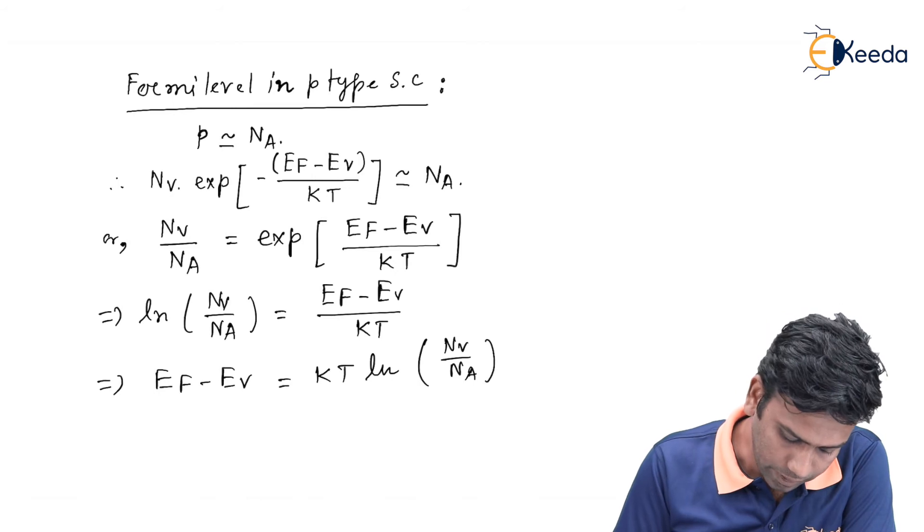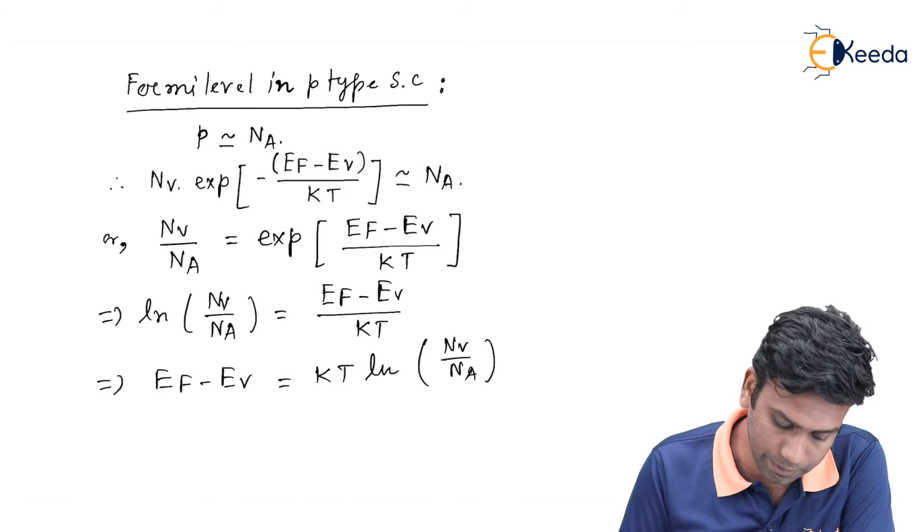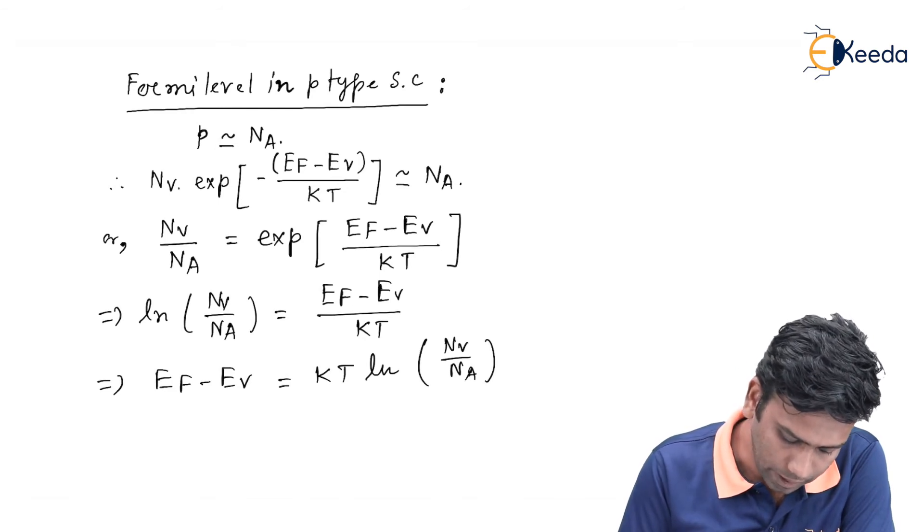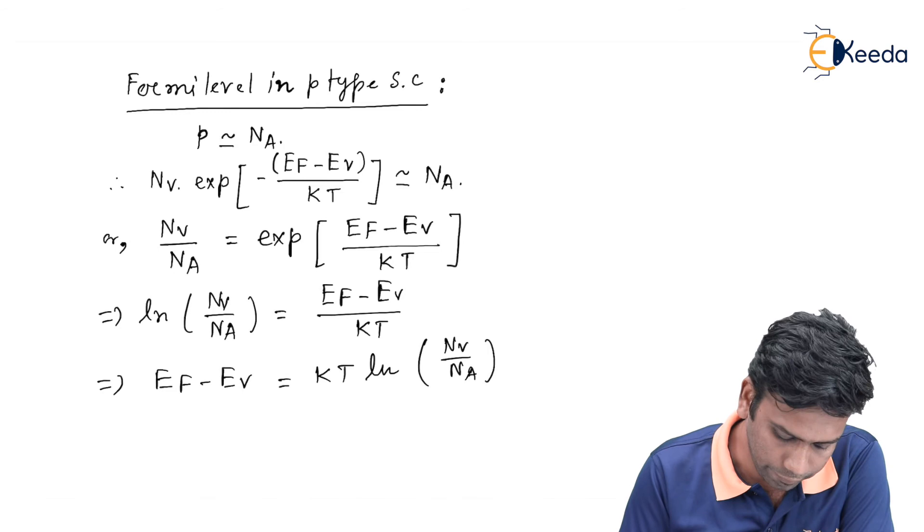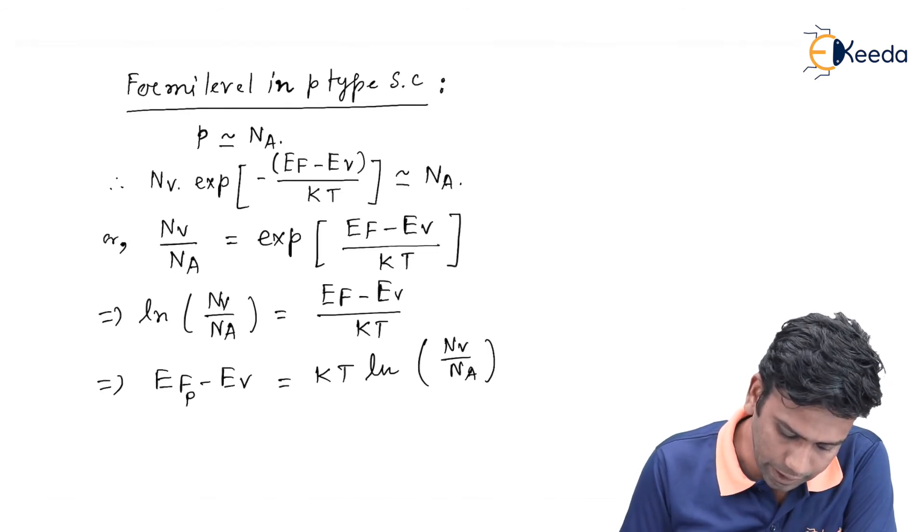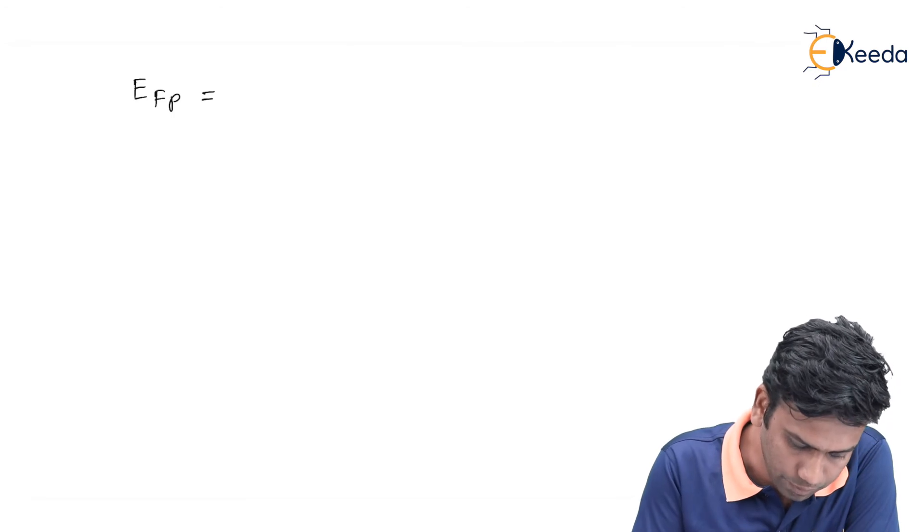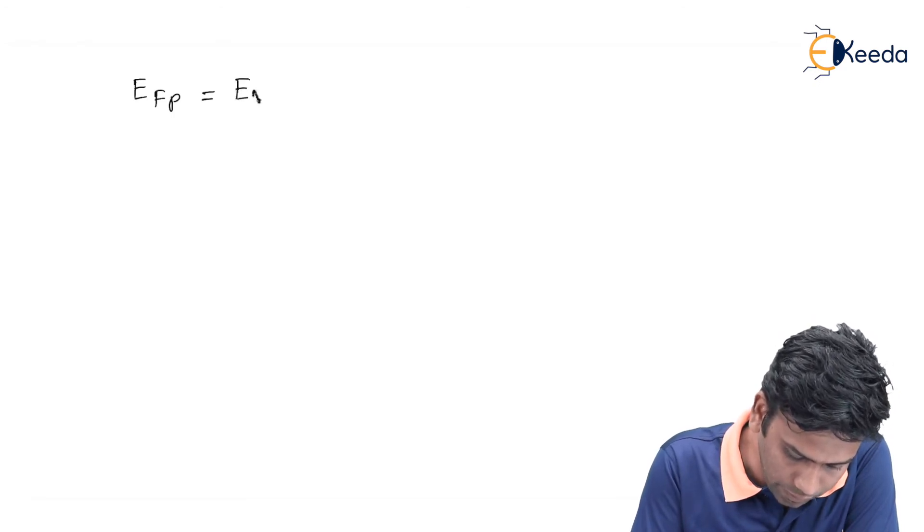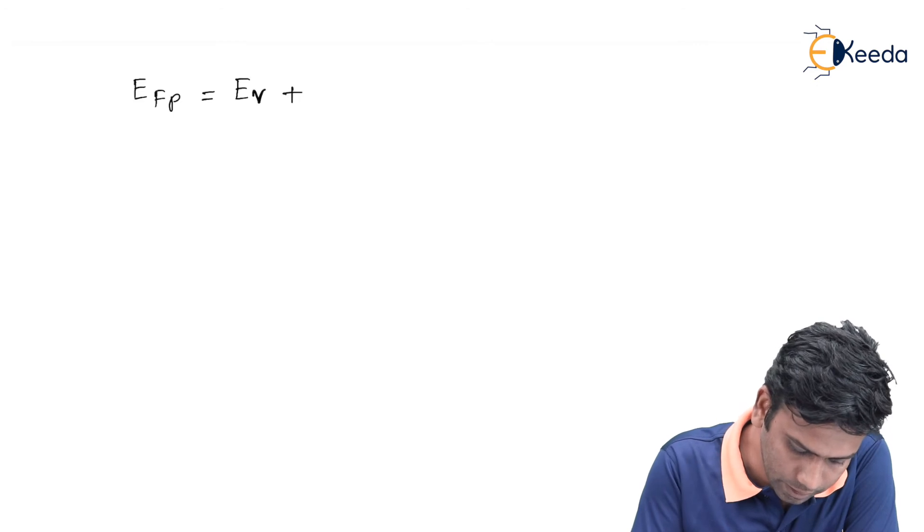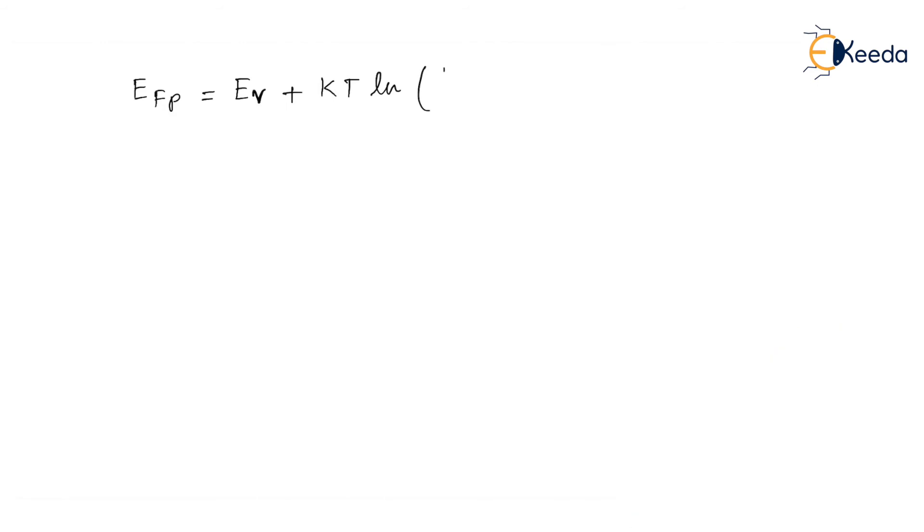This is the equation that will determine the Fermi level in the p-type semiconductor. That is why I am denoting the Fermi level for this p-type as EFP. So EFP can be written as EFP is equals to EV plus KT ln Nv by Na.